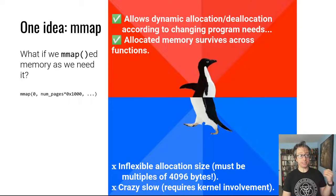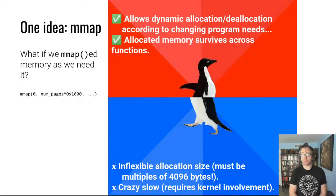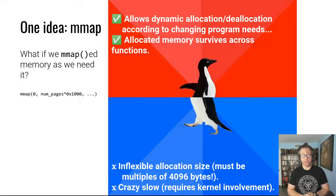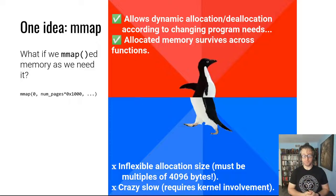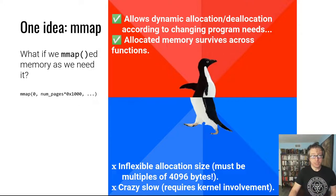We can think back to another type of memory: memory-mapped memory. We've seen the use of mmap to create pages in memory on demand. So we could use mmap for every NPC or object that needs to persist across multiple function invocations — map a page of memory, use it, and when done, unmap it. This allows dynamic allocation and deallocation, and allocated memory survives across different functions.